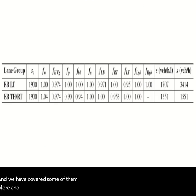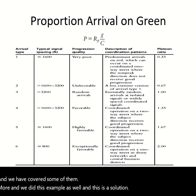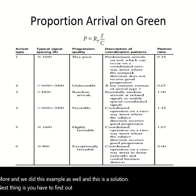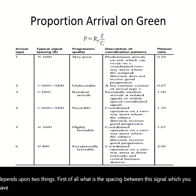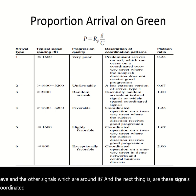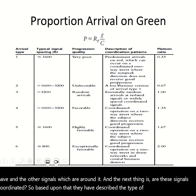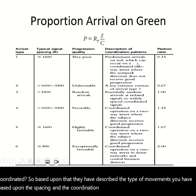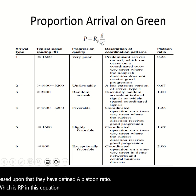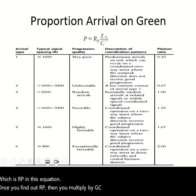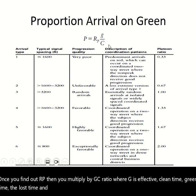The next thing is to find out the proportion of arrivals during green time. It depends on two things: the spacing between this signal and other signals around it, and whether these signals are coordinated. Based on spacing and coordination, they have described the type of movements and defined a platoon ratio R_p. Once you find R_p, you multiply by the g/c ratio, where g is the effective green time and C is the cycle length. This gives P, the proportion of vehicles arriving during green time.